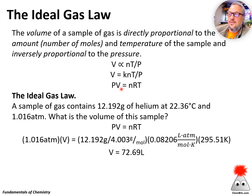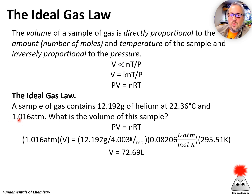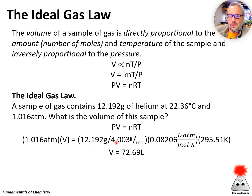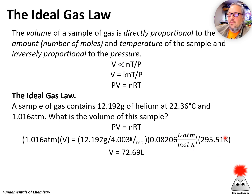We're going to use that in a bunch of different ways. Quick example: a sample of gas contains 12.192 grams of helium at 22.36 degrees C and 1.016 atmospheres. What is the volume of this sample? PV equals nRT — we've got all of our pieces. Pressure is given in the problem. Volume is what we're looking for. For moles, since it's helium, we can convert grams to moles. And for temperature, make sure we're using Kelvin because we need an absolute temperature scale.